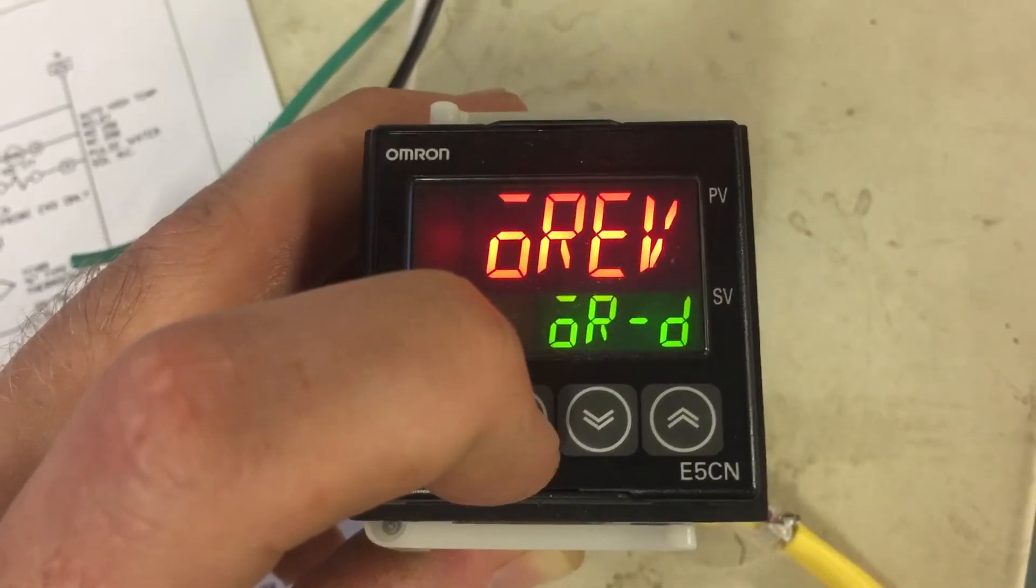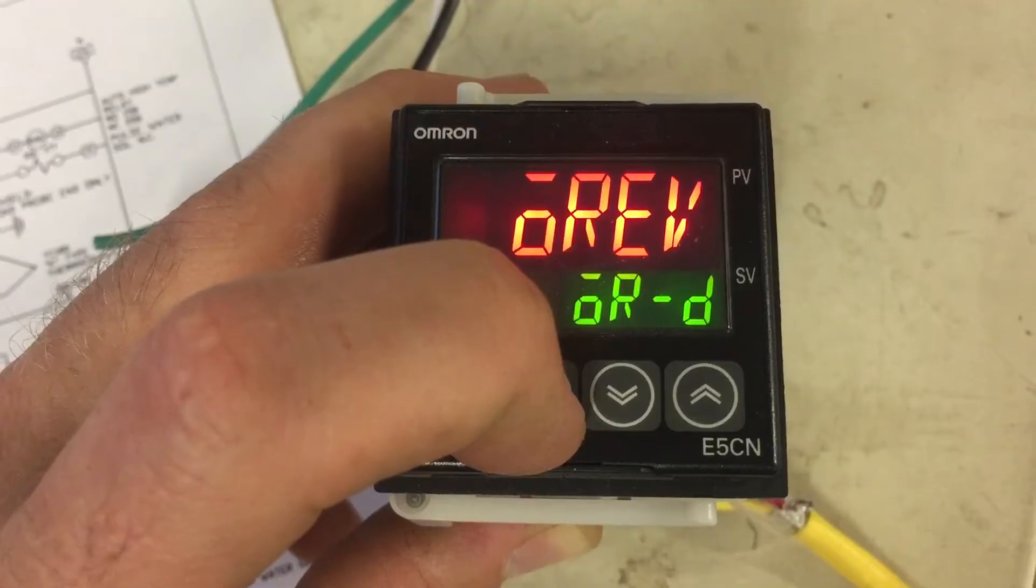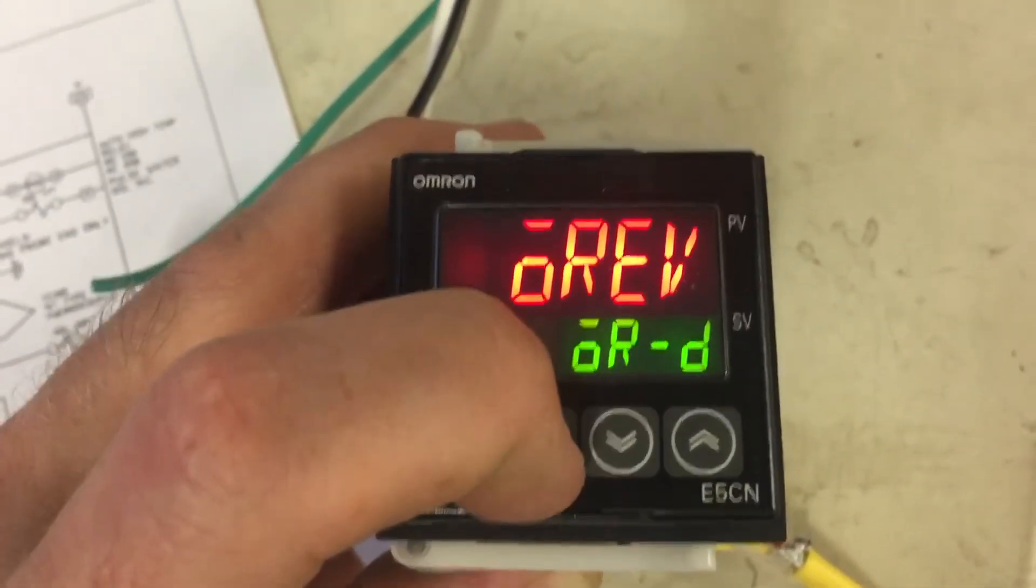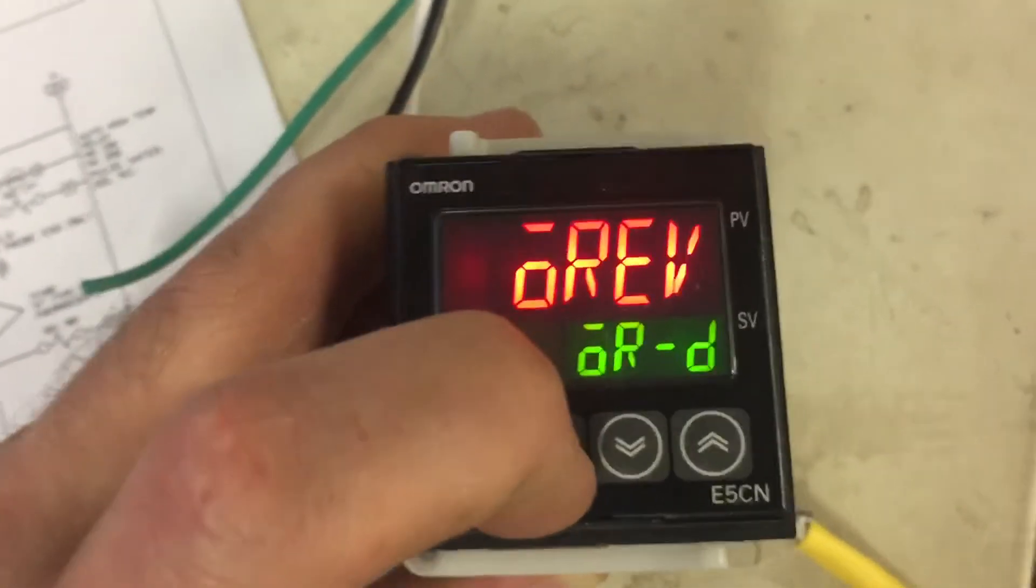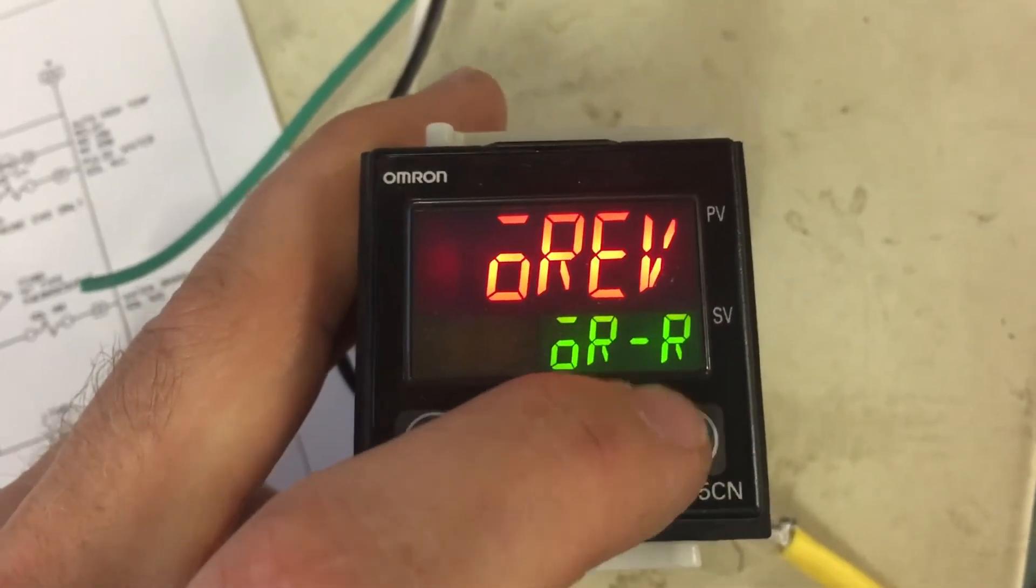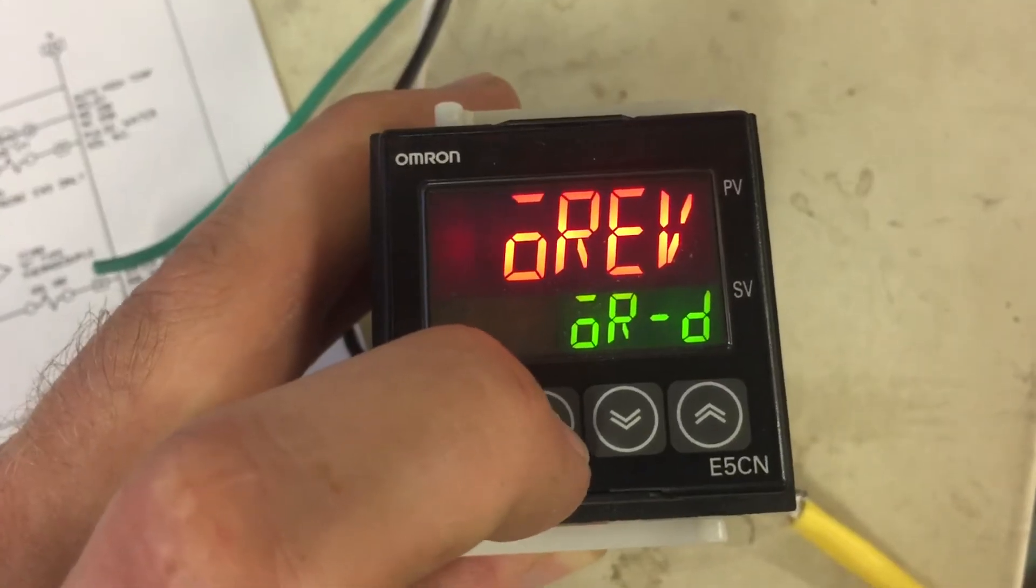And this is the object control. And in this instance, we're going to be direct acting for a cooling mechanism. If you left this as, for instance, R for reverse, then it would be a heating mechanism. We want it to be D for cooling.